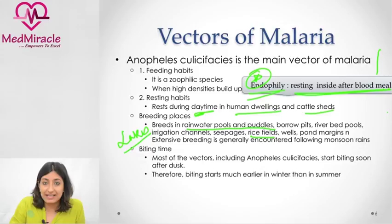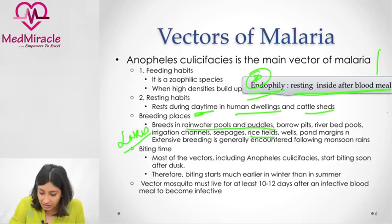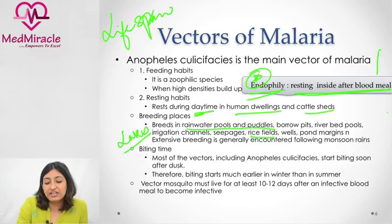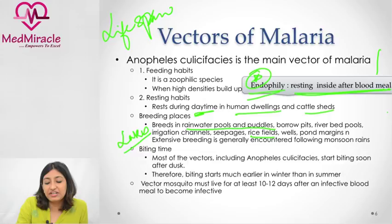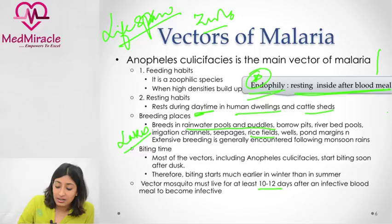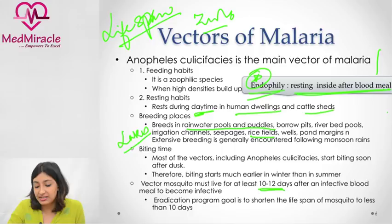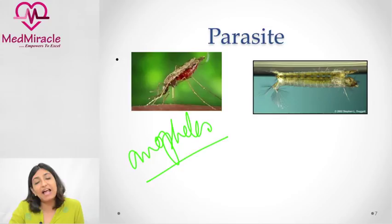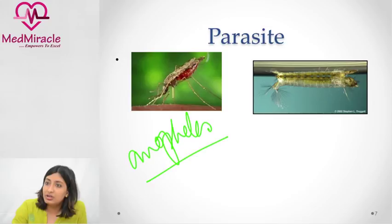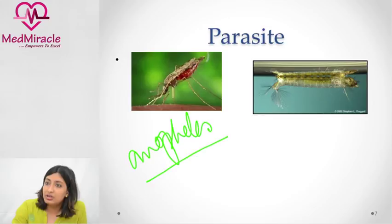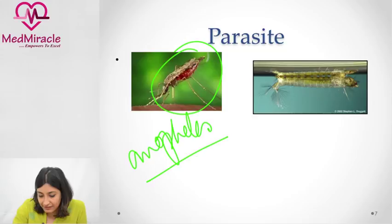The biting time is at dusk, after evening. The lifespan of a mosquito is generally two weeks, around 15 to 20 days. However, it must survive at least 10 to 12 days after an infective blood meal — from the gametocyte stage to sporozoite development in the stomach lining — for the life cycle to complete. Anopheles can be identified by its 45-degree resting angle with no markings, and the larva rests parallel to the water surface.